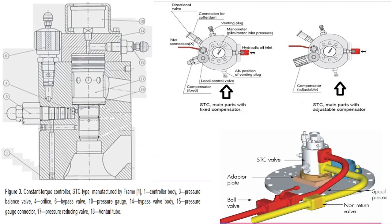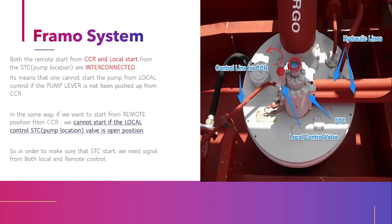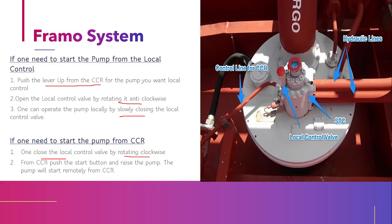This is the internal diagram of the HTC. The local control valve also functions as a bypass valve. There is a venting arrangement, a pressure gauge, a pressure reducing section, a pressure balancing valve, and another pressure balancing valve at the top. Components visible include the nanometer, venting plug, hydraulic inlet and outlet, compensator, and pilot connection — this is how the HTC looks internally.